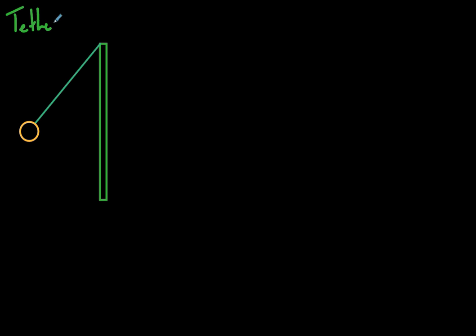Let's do an example question — this is called a tetherball question, or a swing at the carnival type question. Here's the general idea: these tend to be not necessarily difficult, but you have to have your thinking correct when solving one like this. We'll use a tether ball as an example — this is the classic physics tetherball question.